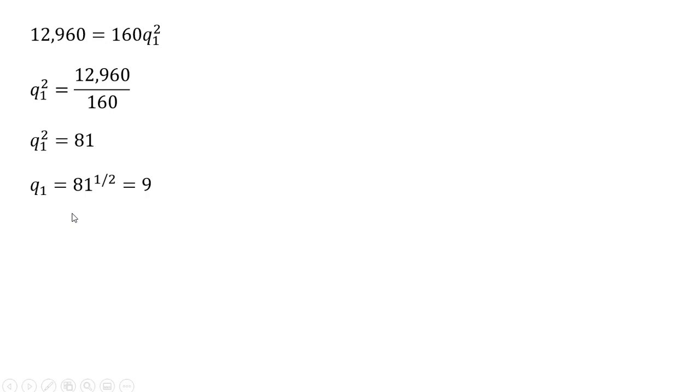And now to get the output of good 2, we're going to take that 9 and plug it into our constraint. So where we have this q subscript 1, we're replacing it with 9. And the output of good 2 here is going to be 3.